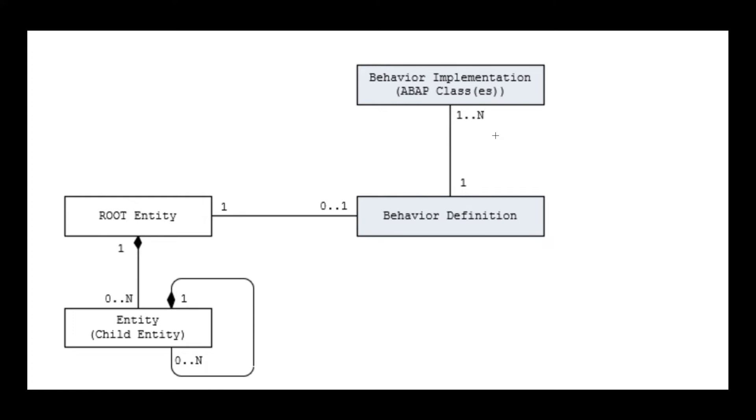So what is our business object definition? So here you could see the root entity will be having a one-to-n relationship with the child entities. So one root entity will be having n number of child entities.